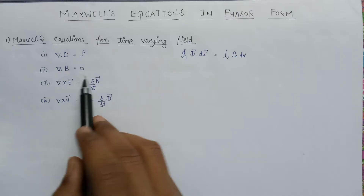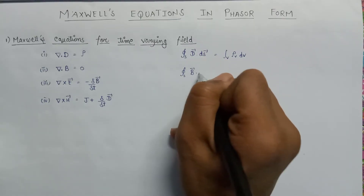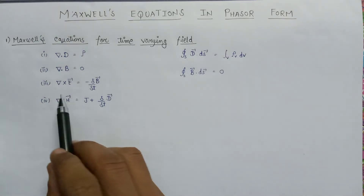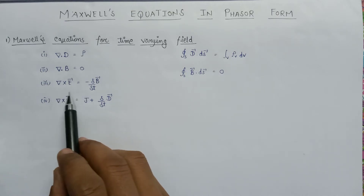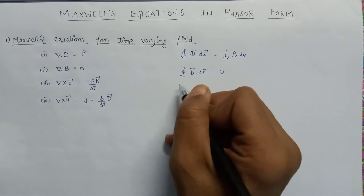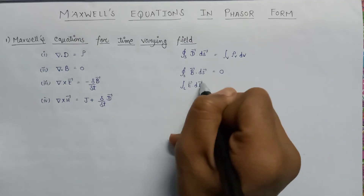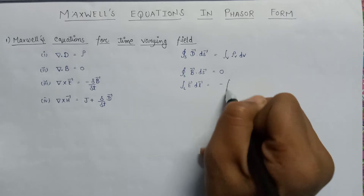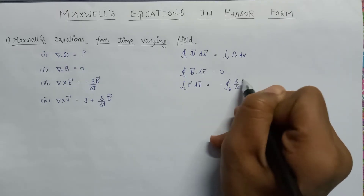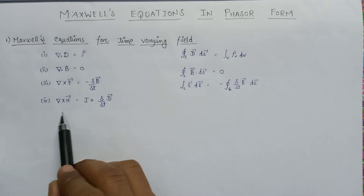The differential form of the second equation is del dot B equals zero, and in the integral form it is represented as the integration over a closed surface of B dot dS equals zero. Maxwell's third equation in differential form is del cross E equals negative del B by del t, and in the integral form it is the line integral of E dot dl equals negative of the surface integral of del B by del t dot dS.